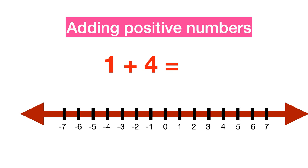Adding positive numbers. You can add positive numbers on a number line. As we already know, when two positive numbers are added, the sum will always be positive. For this reason, when adding positive numbers, the direction of movement is to the right.